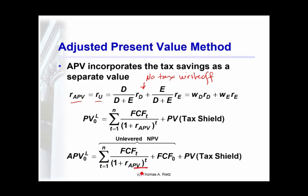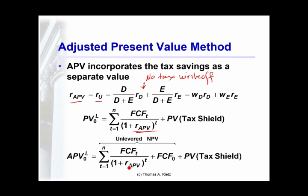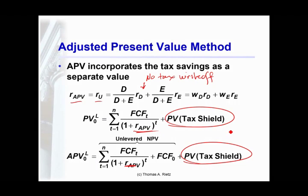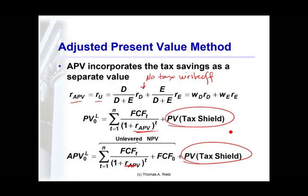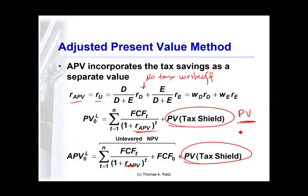We discount the cash flows at the unlevered cost of borrowing for the firm and get the unlevered present value and net present value, and then we separately value the tax shield. As debt and equity vary, the unlevered cost of borrowing should not vary, but the value of the tax shield will. We can account for that directly in the adjusted present value calculations, and we can add present values of other things just as easily as the present value of the tax shield.